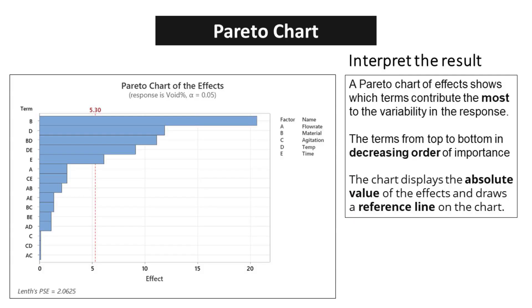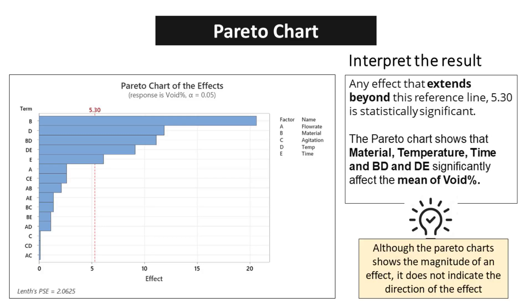A Pareto chart of effects shows which terms contribute the most to the variability in the response. The terms are listed from top to bottom in decreasing order of importance. As we analyze the Pareto chart, we can clearly see the absolute value of the effects, providing valuable insights. Any effect that extends beyond the reference line, 5.30, is considered statistically significant. The Pareto chart shows that material, temperature, time, BD and DE significantly affect the mean of void percent.